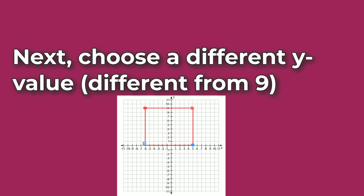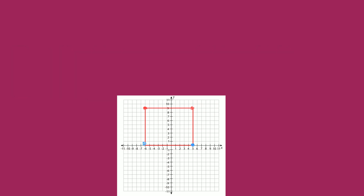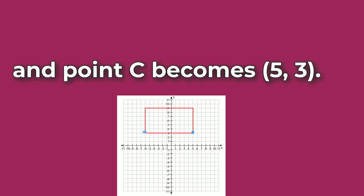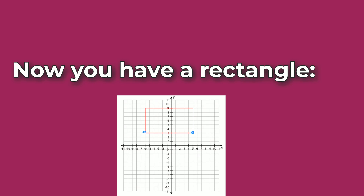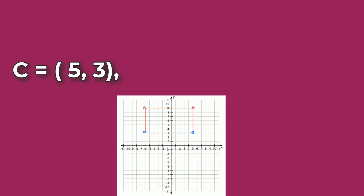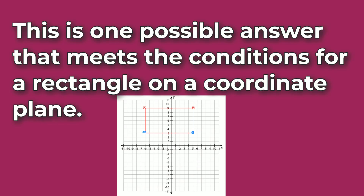Next, choose a different Y value — different from 9 — for the bottom side of the rectangle. For example, if you choose Y equals 3, then point D becomes (−6, 3) and point C becomes (5, 3). Now you have a rectangle: A equals (−6, 9), B equals (5, 9), C equals (5, 3), and D equals (−6, 3). This is one possible answer that meets the conditions for a rectangle on a coordinate plane.